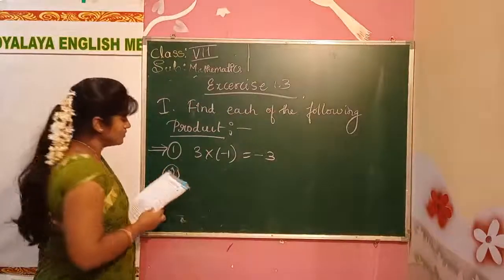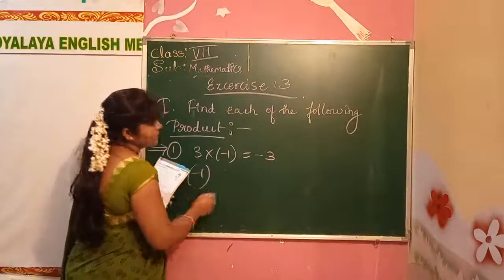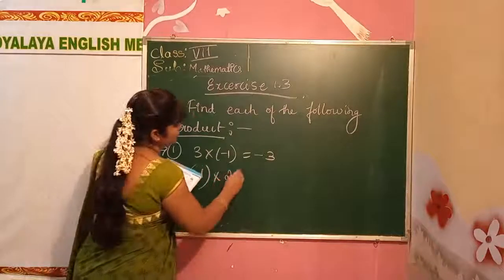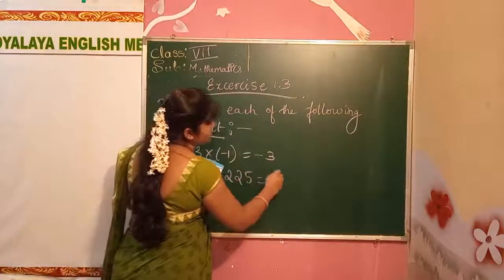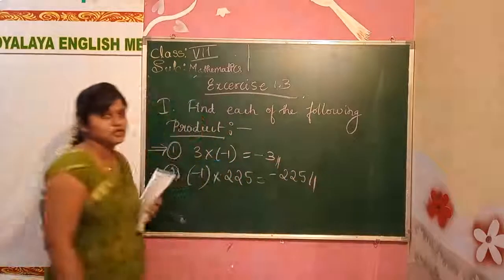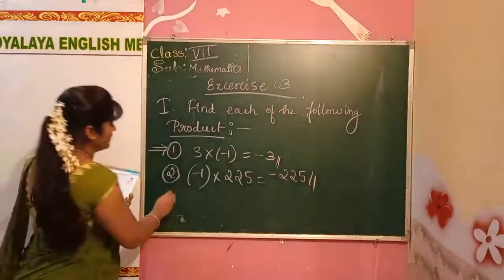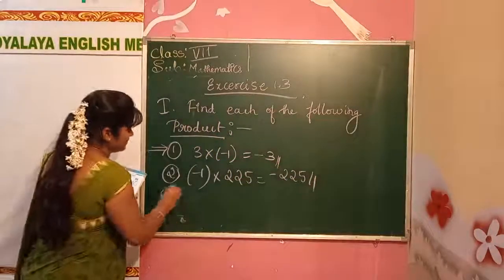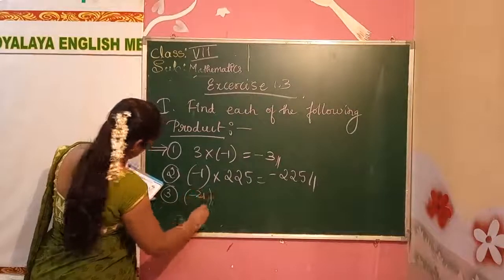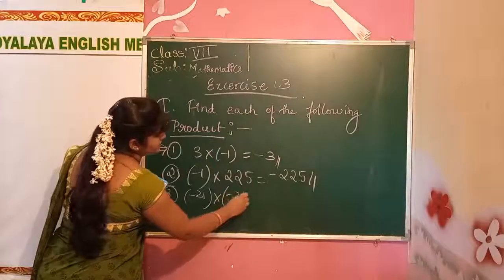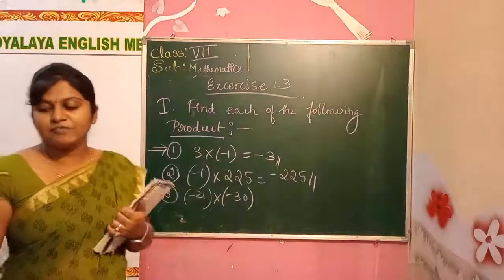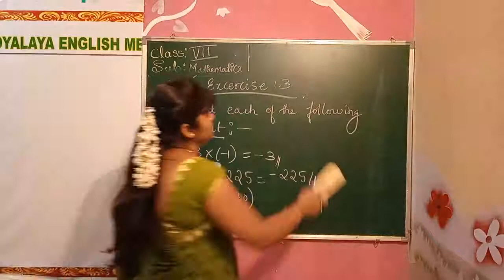Part B: same property — the multiplicative identity. Minus 1 into 225 gives minus 225. Part C: minus 21 into minus 30. Multiply this on the rough side. 21 into 30 gives 630. Minus into minus gives plus, so the answer is positive 630.